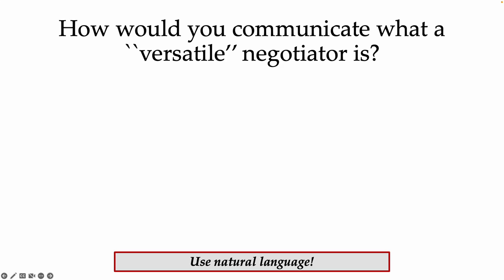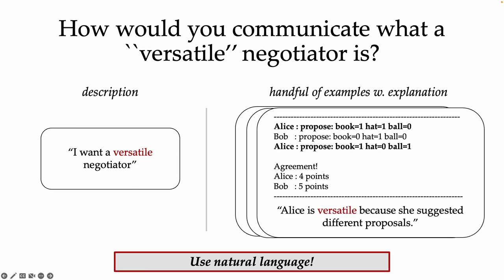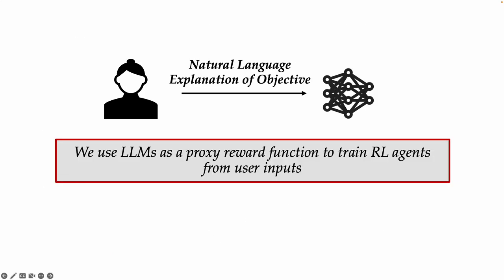Instead, we make it easier for humans to communicate their objectives by using natural language — either a description of their objective or a handful of examples with a label or explanation. We do this by using an LLM as a proxy reward function in an RL training loop. The high-level idea is that we ask the LLM whether agent behavior satisfies a user's goal during RL training, and we use this as a reward signal to train the agent.